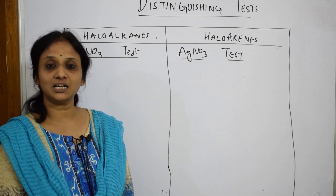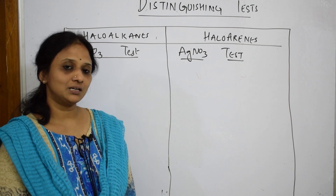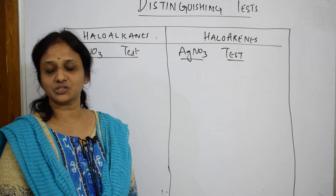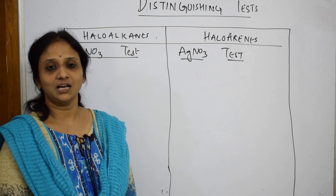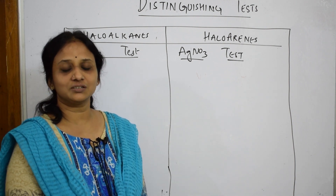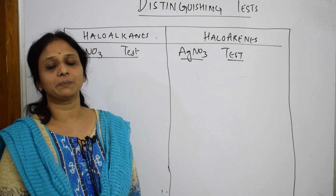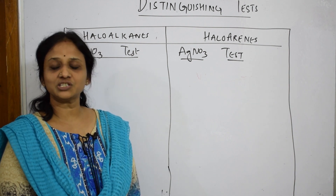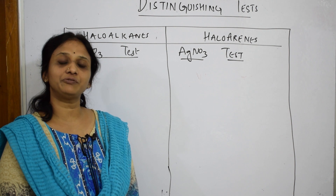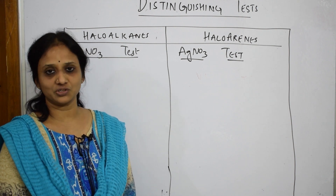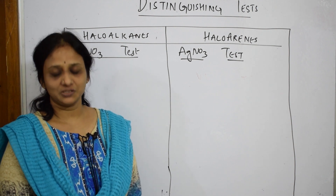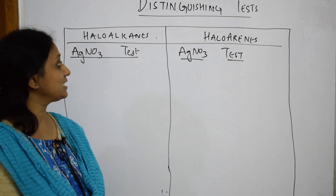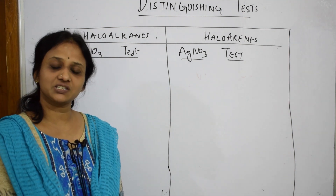I'll also be doing a complete revision — a variety of revision for your organic chemistry — so that you score 27 marks. The whole organic chemistry, covering all the chapters, has been framed under three pages and I'll be doing that also. So let's start the first distinguishing test: distinguishing between haloalkanes and haloarenes, which is your first chapter of organic chemistry.